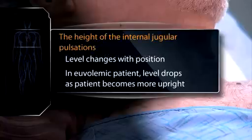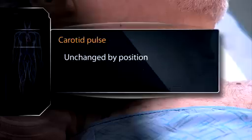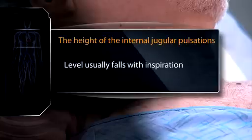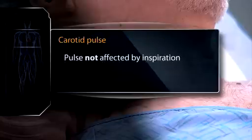The level of internal jugular pulsations changes with position. In a euvolemic patient, the level in the neck drops as the patient becomes more upright, whereas the carotid pulse is unchanged by position. Finally, the level of internal jugular pulsations usually falls with inspiration, whereas the carotid pulse is not affected by inspiration.